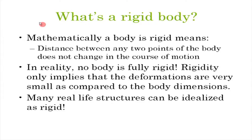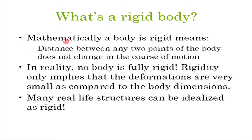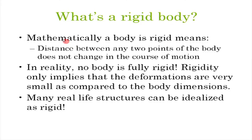Before we proceed, let us briefly remind ourselves what we mean by a rigid body. Strictly speaking, no object in the world is truly rigid. The mathematical definition is: if you take a hard-bound textbook, draw two points on it, and measure the distance between them, then no matter how you turn, flip, or spin it, that distance does not change. Rigidity implies that deformations are very small compared to body dimensions, and many real-life structures can be idealized as rigid.